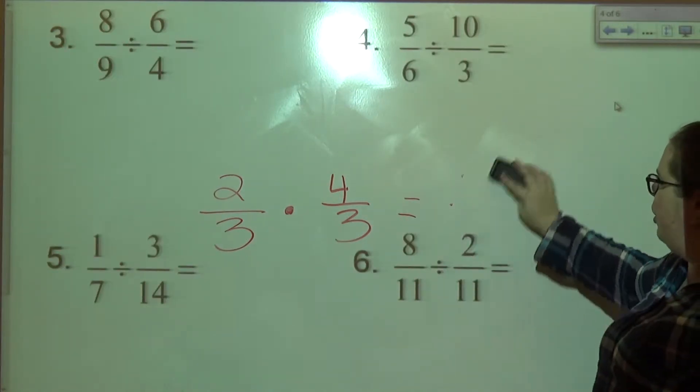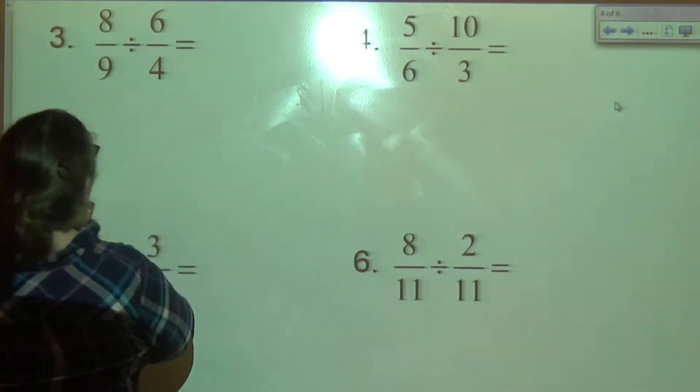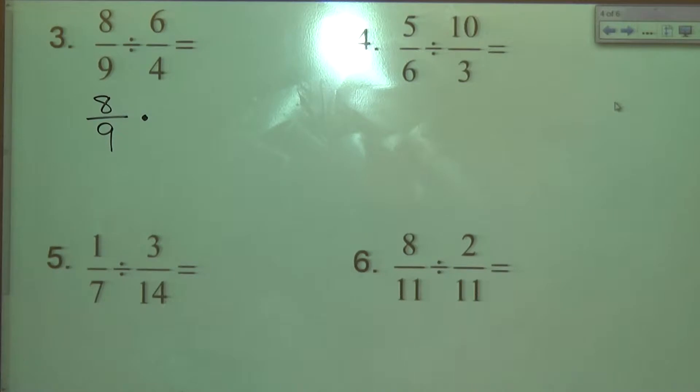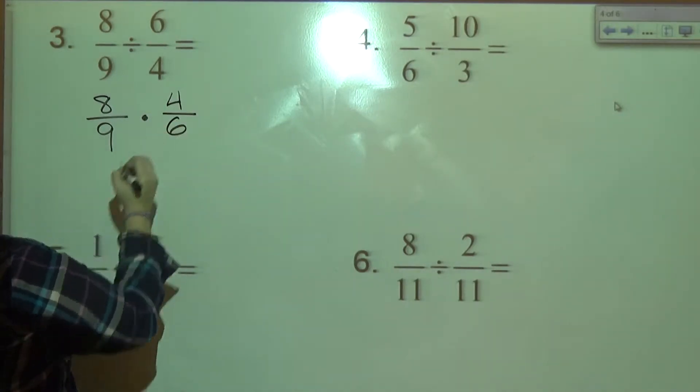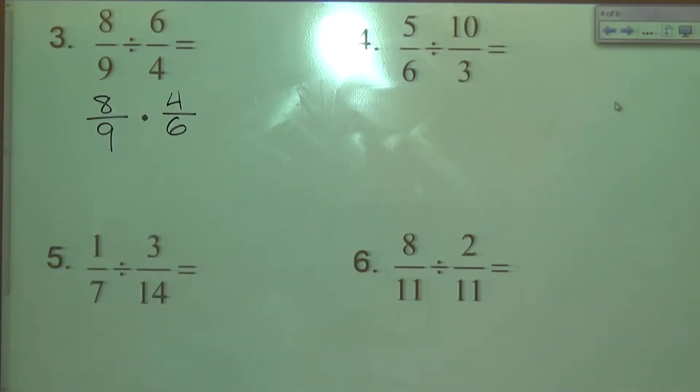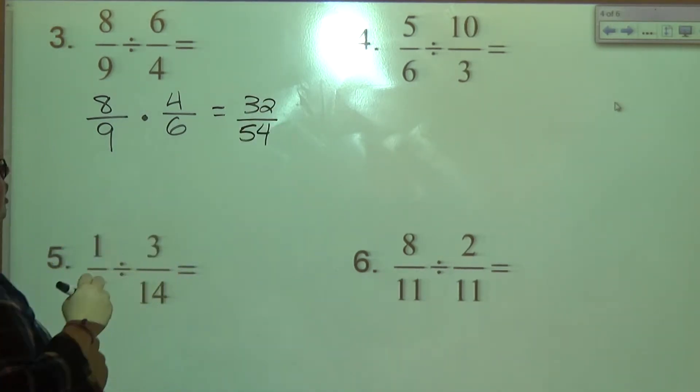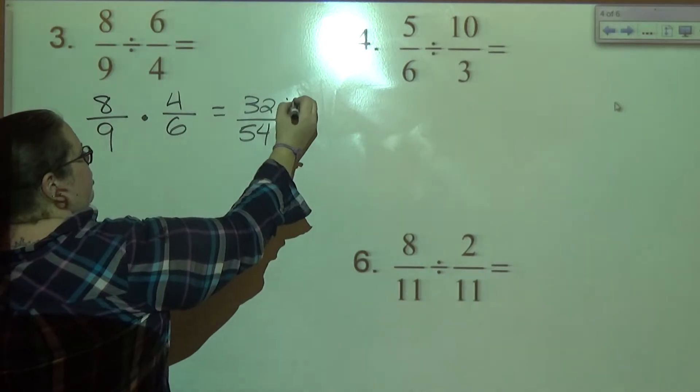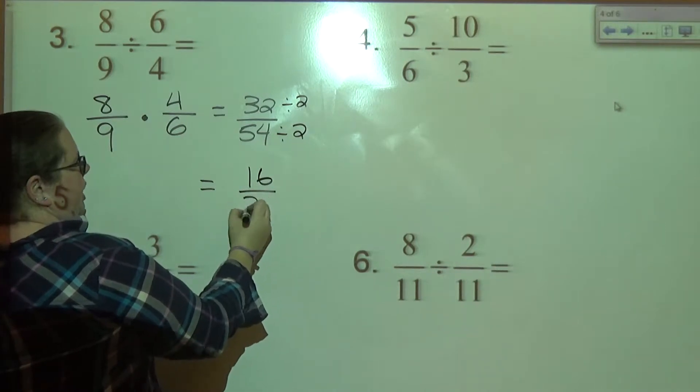Alright. Pause the video. Try the first two. Again, we're going to keep that first fraction the same, eight over nine. Change it to times. Take the reciprocal of the second fraction. Dividing is the same as multiplying by the reciprocal. You can try to cross cancel. You can just multiply across. It's up to you. If I multiply across, I get 32 on top, 54 on the bottom. What can I divide by? I think I can just divide by two and that's it. You get 16 over 27 and that's your answer.